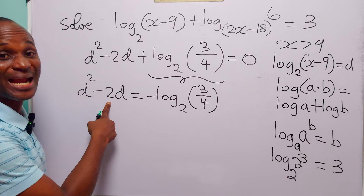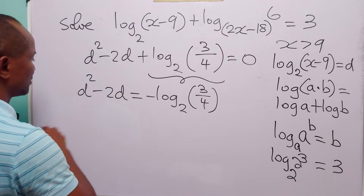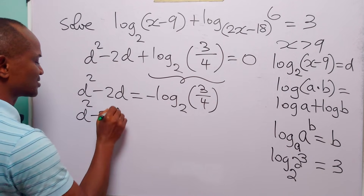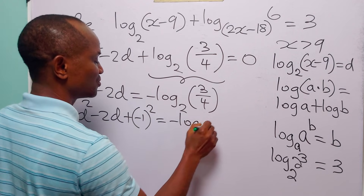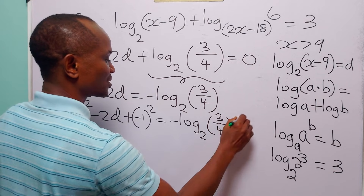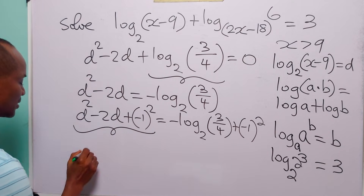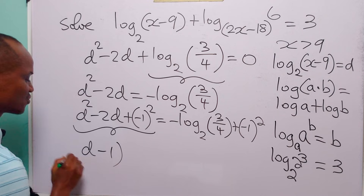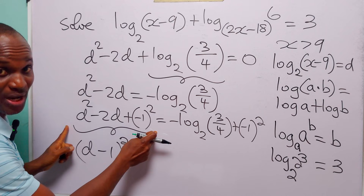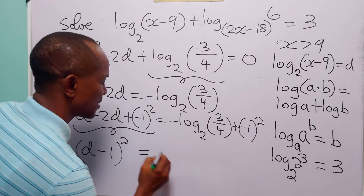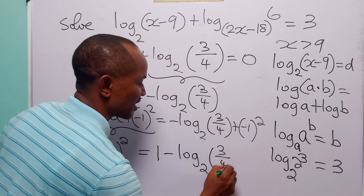Now let us divide the coefficient of D, which is minus 2, by 2, square it, and add to both sides of this equation. When we do that, we have D squared minus 2D plus minus 1 squared equals minus log to base 2 of 3 over 4 plus minus 1 squared. You know that the left side is a perfect square: we take D and minus 1 and square both. And this equals minus 1 squared, which is 1, minus log to base 2 of 3 over 4.